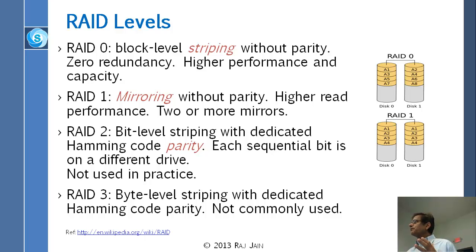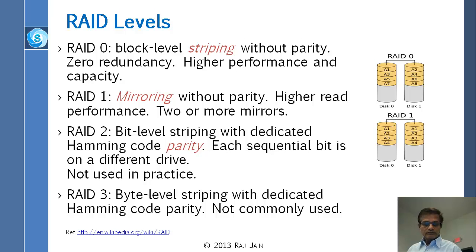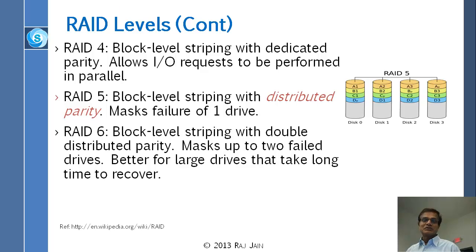RAID 3 is byte-level striping. RAID 2 is bit-level striping — you do 1 bit here, 1 bit here, 1 bit here, and the parity bit there. Byte level means you write 1 byte, 1 byte, and a parity byte. Neither RAID 2 nor RAID 3 are commonly used. RAID 0 and RAID 1 are the ones in use.